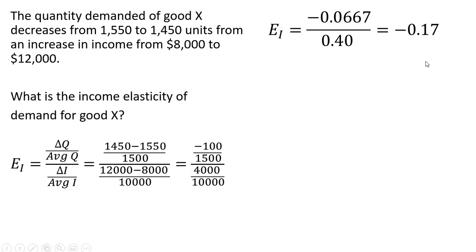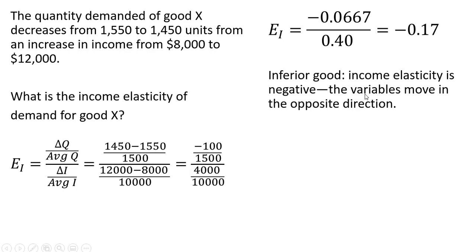So we have an inferior good, a negative coefficient. Income elasticity is negative with an inferior good. The variables are moving in the opposite direction. Income goes up, the quantity demanded falls.